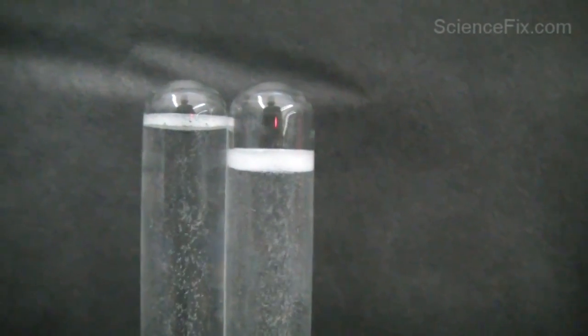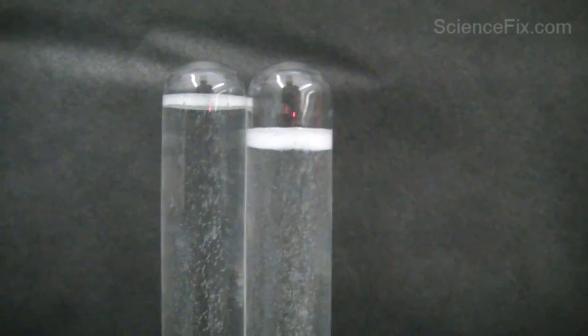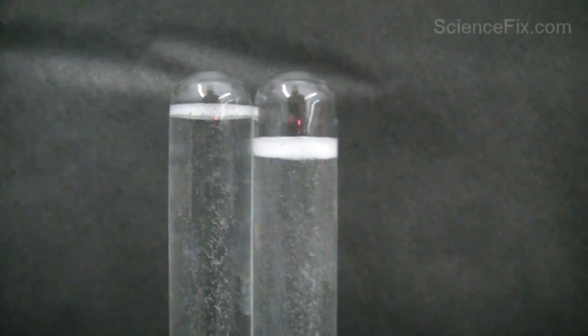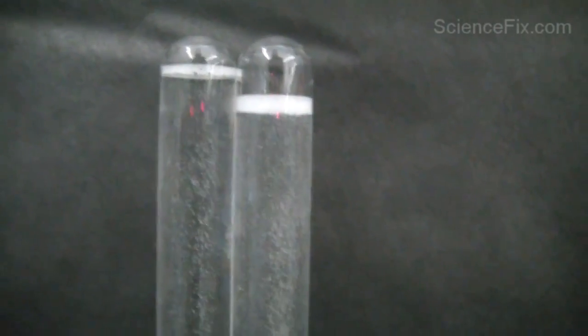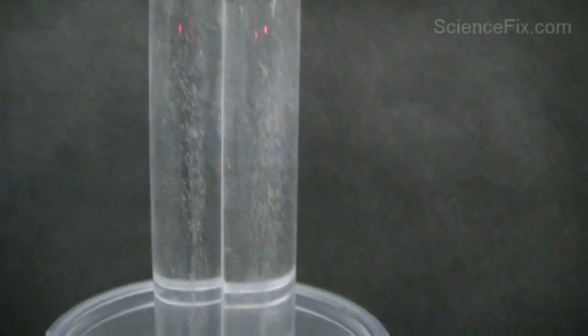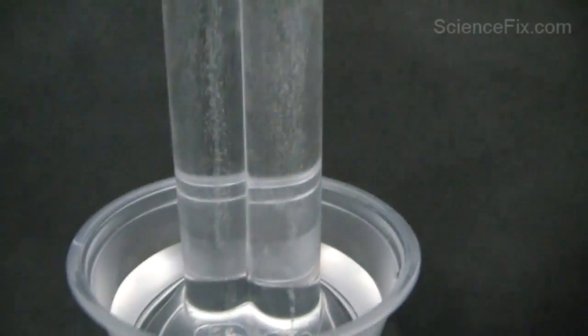You can see in the right test tube you have twice as much hydrogen gas as oxygen gas. This is how experimenters first learned that the ratio of hydrogen atoms to oxygen atoms in water is two to one - it's a two to one ratio, thus H2O.